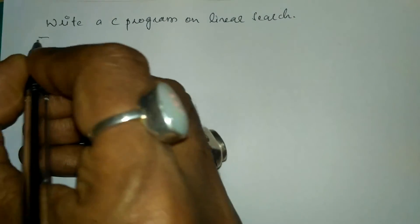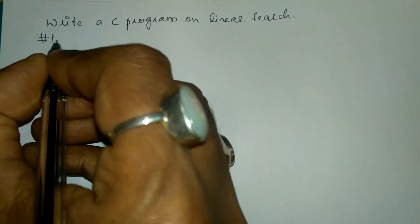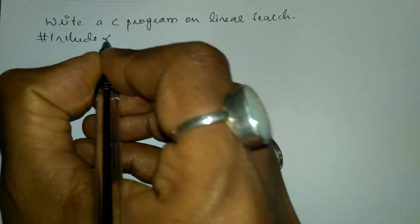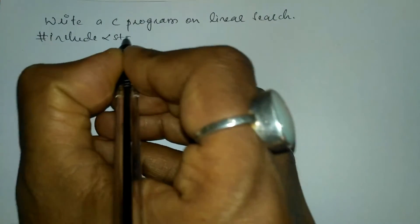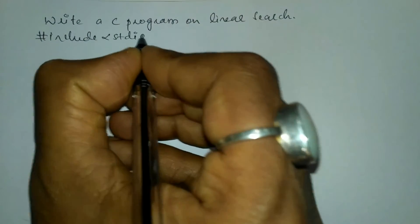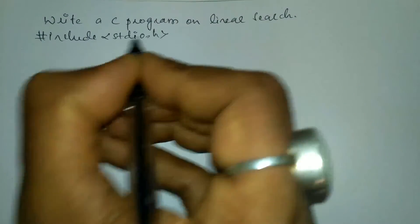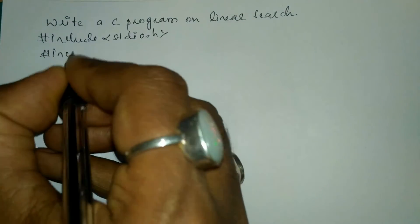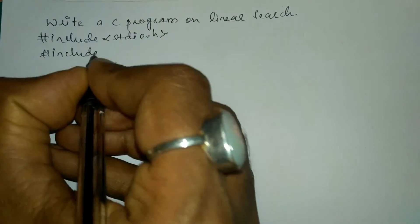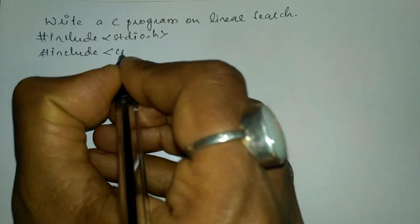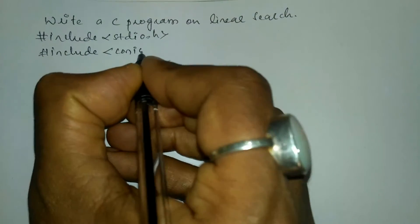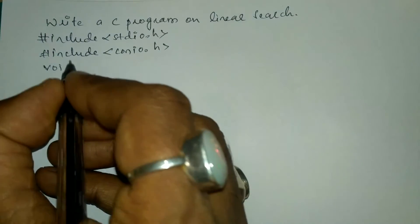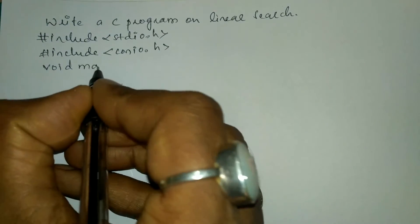Let us write the preprocessor directives: hash include in angular braces we will write standard input output dot h header file. The next preprocessor directive is hash include in angular braces we will write console input output dot h header file.